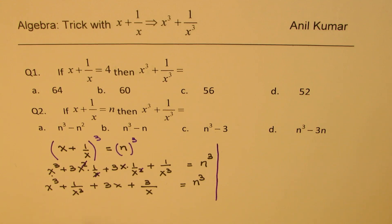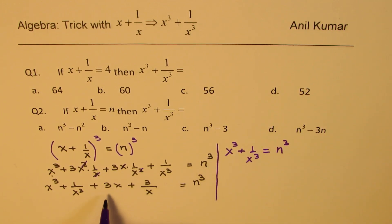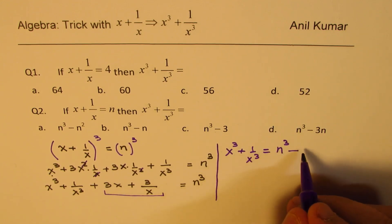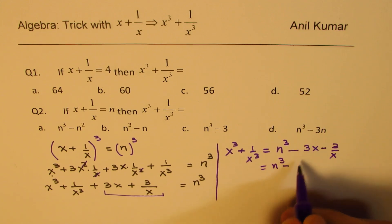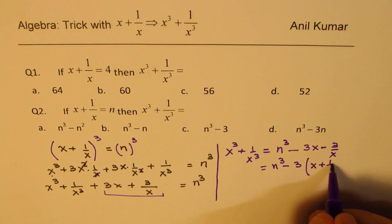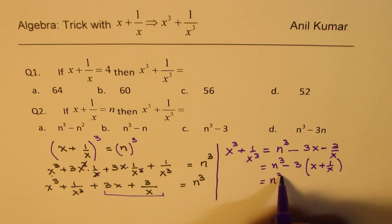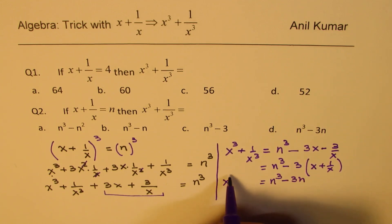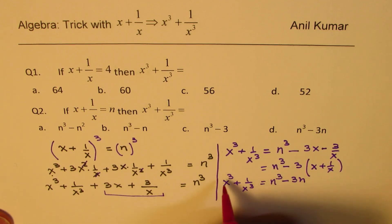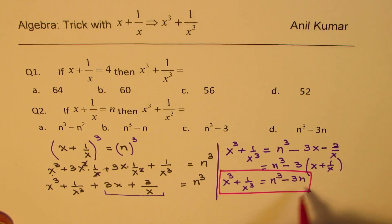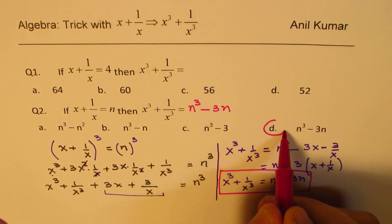What we have is 3x squared over x plus 3 over x — because one of the x's cancels — set equal to n cube. Now, if I rearrange, I get x cube plus 1 over x cube equals n cube minus 3x minus 3 over x. Taking 3 as common gives x plus 1 over x, which we know is n. So what we get is n cube minus 3n. Therefore, x cube plus 1 over x cube equals n cube minus 3n. That becomes our formula, which is the last option.